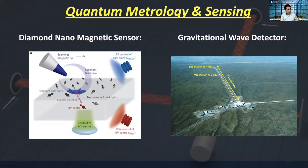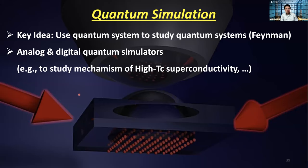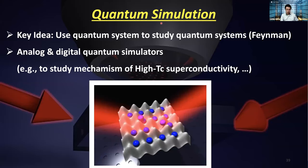Besides communication, computing, and sensing, there are also efforts in quantum simulation. At Yale, there are cold-atom experiment platforms where people are building quantum simulators to understand, for example, the origin of high-TC superconductivity. This echoes Feynman's original proposal — maybe you should build a quantum system to really understand our quantum world. The reason to distinguish simulators from quantum computers is that simulators are probably easier to build as they are less demanding in terms of fault tolerance.